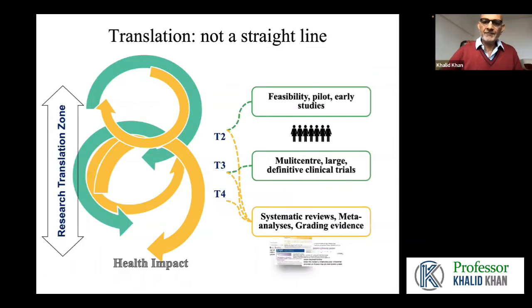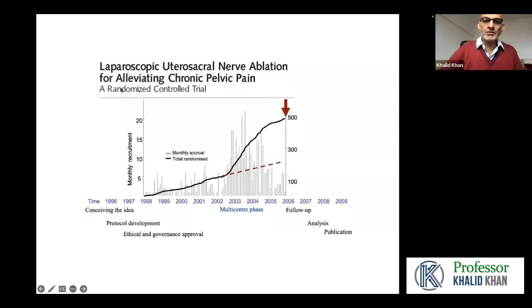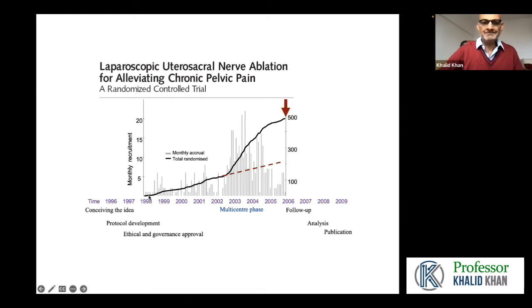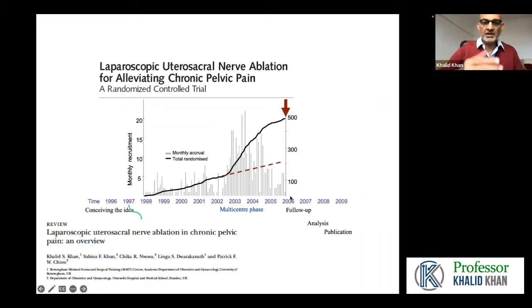Here is a study shown — a randomized controlled trial that started in 1998 and took nearly 10 years to be published. Conducting studies where patients are recruited — in this study around 500 patients — takes a long time. In the journey of this study, a systematic review was conducted in planning the study.